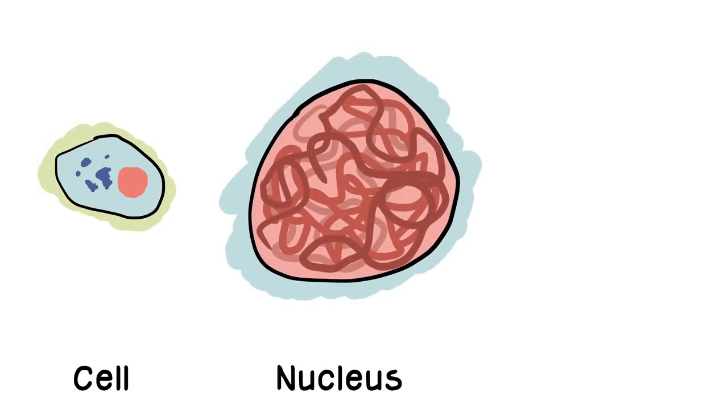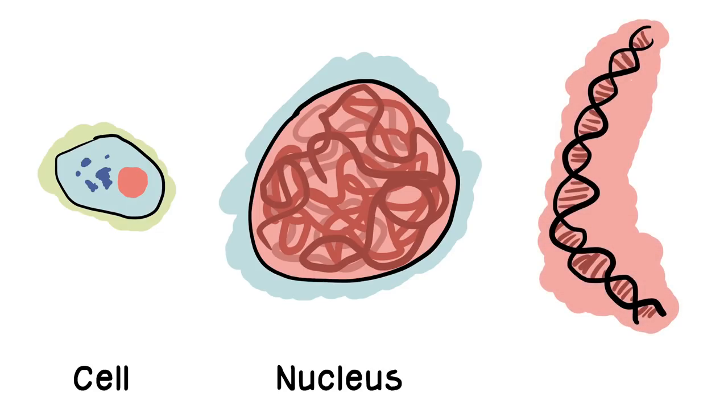Inside each cell there is the nucleus. It contains the chromosomes where all the genetic information is stored. Chromosomes are made up of extremely long strings of DNA.